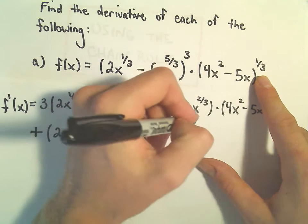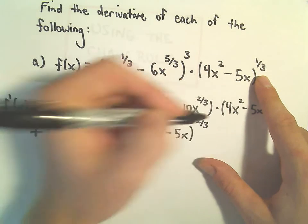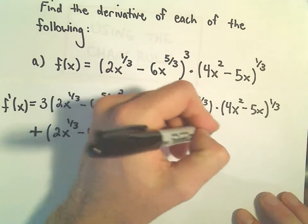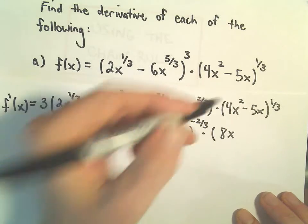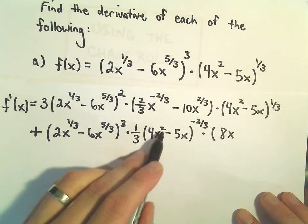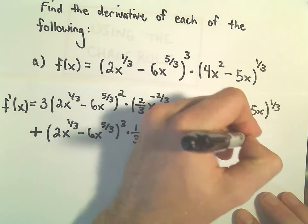So 1/3 minus 3/3 will give us negative 2/3. And then if we take the derivative of the inside, the derivative of 4x squared will be 8x. So 2 times 4 will give us 8x to the 1st, and then minus 5.